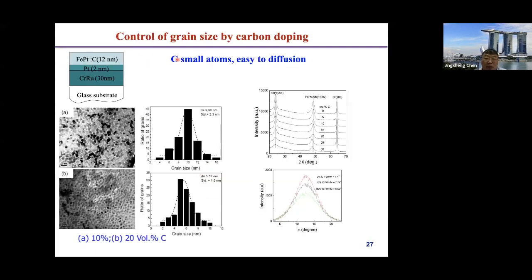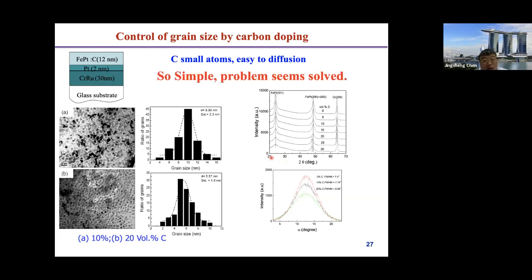We analyzed the problem: the SiO₂ blocked Fe and Pt atom diffusion too much, preventing L10 ordering. So we chose carbon as the grain boundary material. Carbon atoms are small and can diffuse easily but do not form alloys with FePt — unlike metallic materials which easily form alloys with FePt and cannot separate the grains. When we doped carbon atoms, we found that we could get 5 nm grains well-separated, and at the same time still get very good [001] texture — meaning the easy axis is along [001] in the film normal.